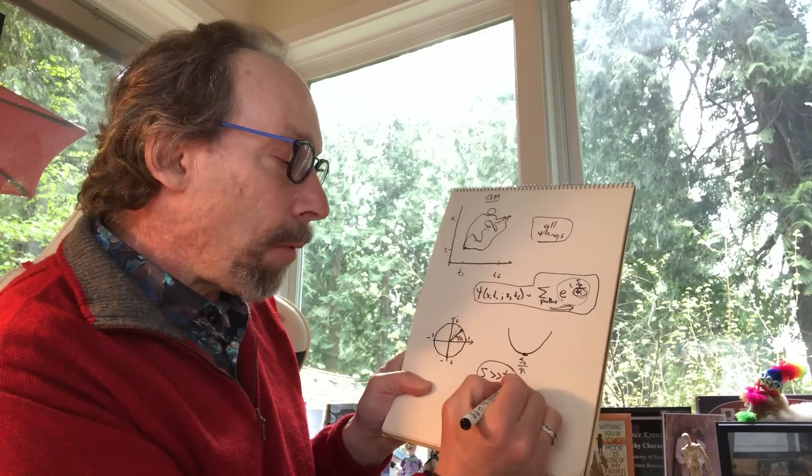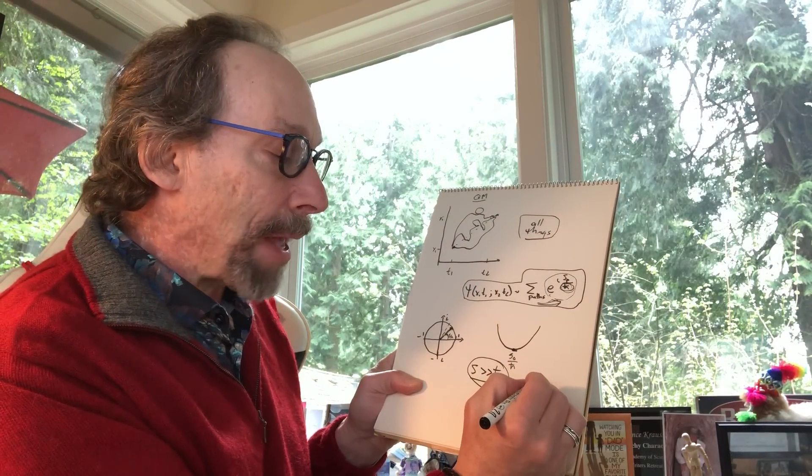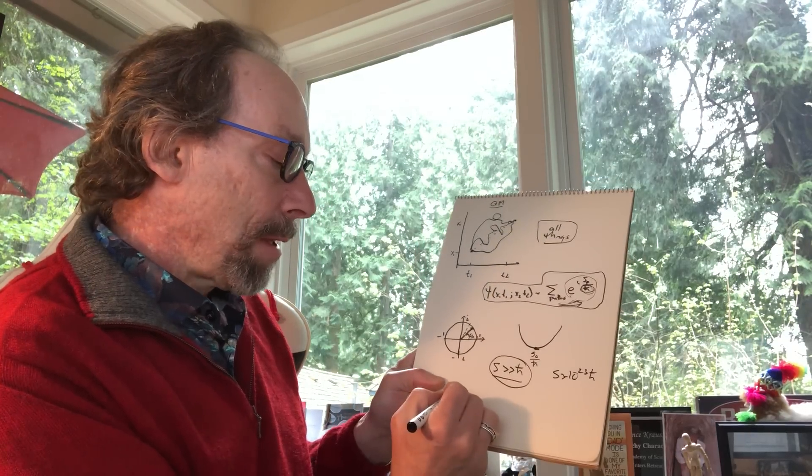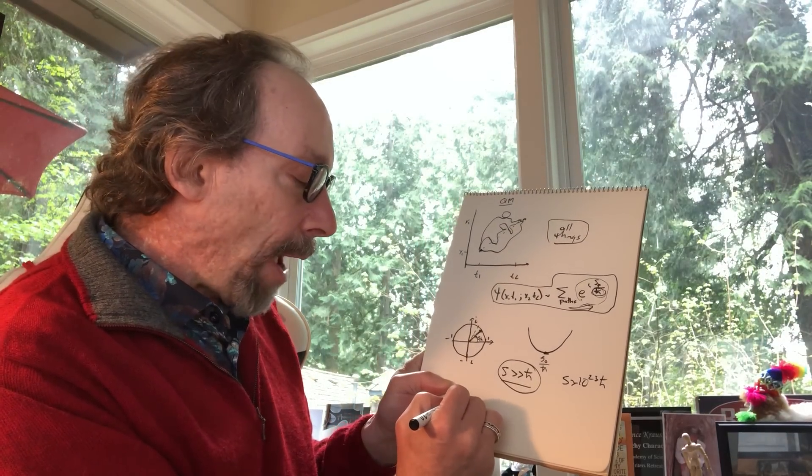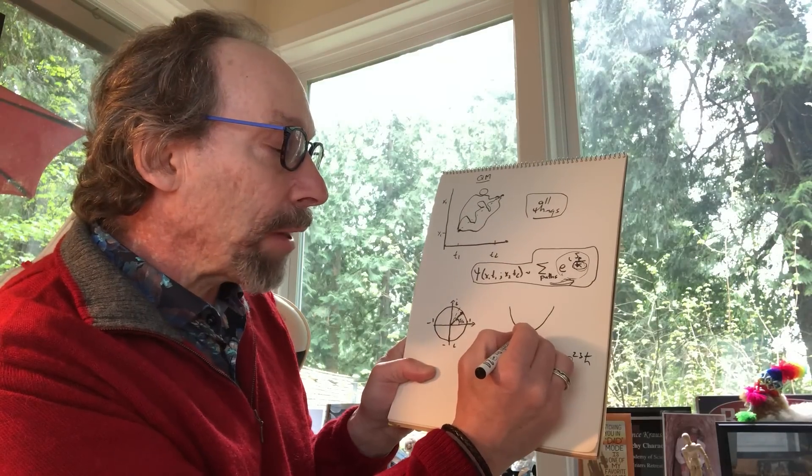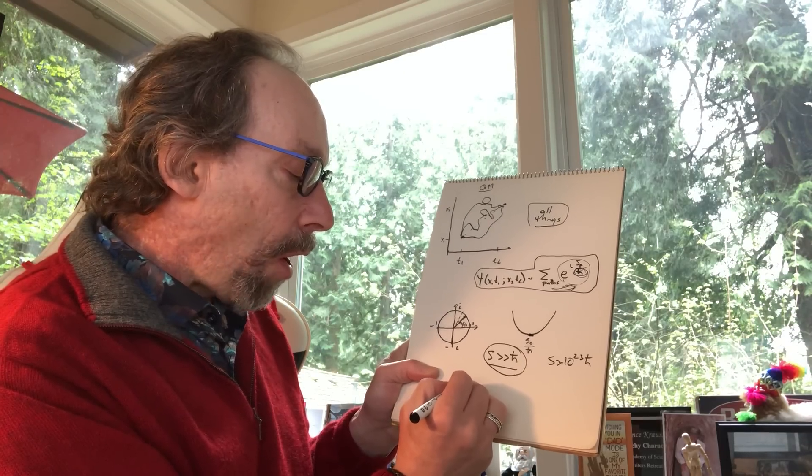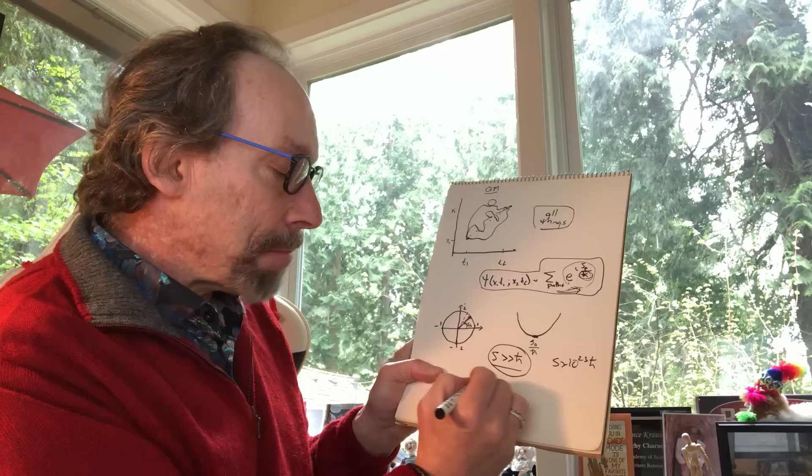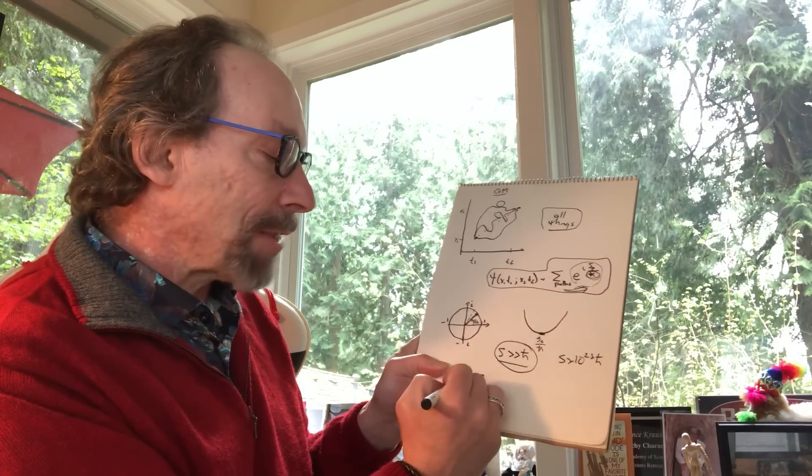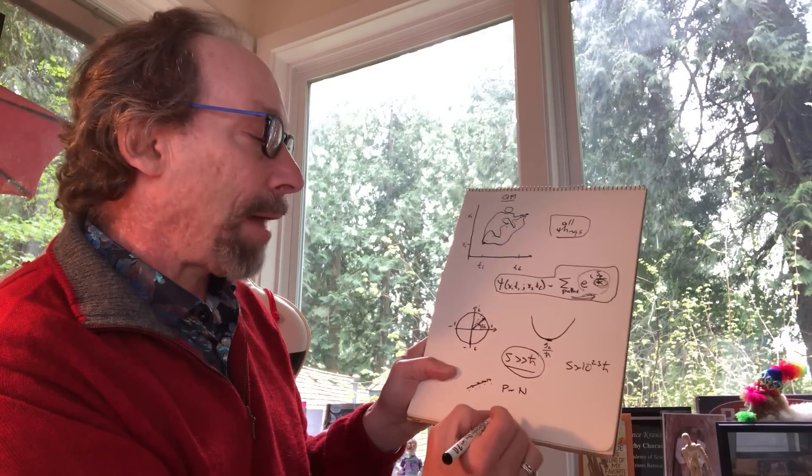So the point is that for a classical system of say 10 to the 23 particles, the action is something like maybe 10 to the 23 times h-bar. So I have say 10 to the 23 paths that are very close to this thing. They all add up the same way. It's like adding up a whole bunch of little vectors all going in the same direction. The probability will be proportional to the number of different paths, but they're all in the same direction so the probability will be proportional to the number of different paths.